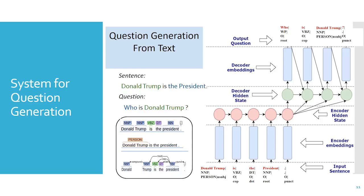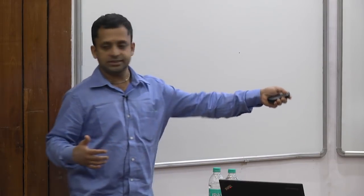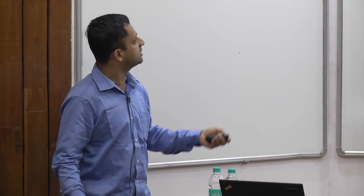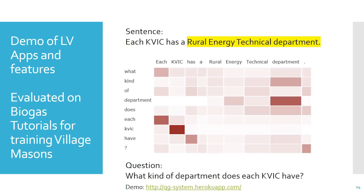Let's look at some example questions generated for the biogas case. The sentence: 'We'll now look at other items required to construct the plants, such as tubes, pipes, and walls.' And here's the question generated: 'What are some materials used to build the plant?' It's able to generalize these entities to 'materials.' Another example: 'You may visit banks such as private banks like IDBI...' generates 'What are some of the private banks?' — though this loses context a bit. 'Each KVIC has a rural energy technical department' generates 'What kind of department does each KVIC have?'